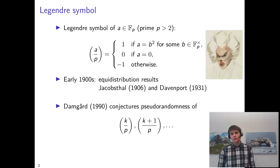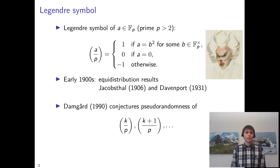In the early 1900s, a number of so-called decade-distribution results about Legendre symbols were shown. In particular, you can show that if you take the string of Legendre symbols of the integers 1, 2, up to p-1, then the number of occurrences of any fixed pattern of 1 or minus 1 is roughly the same.